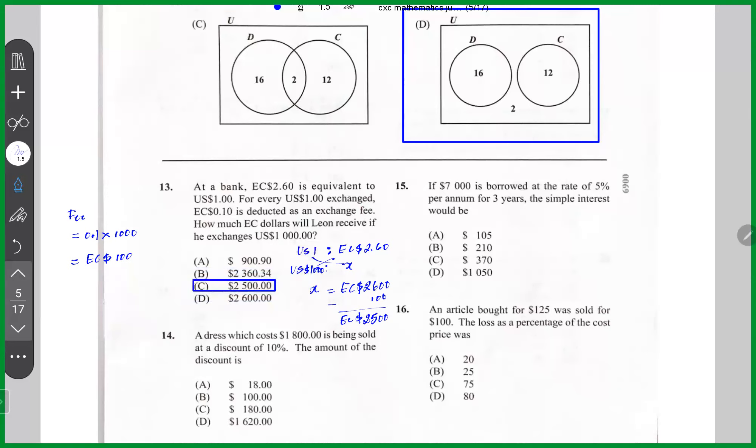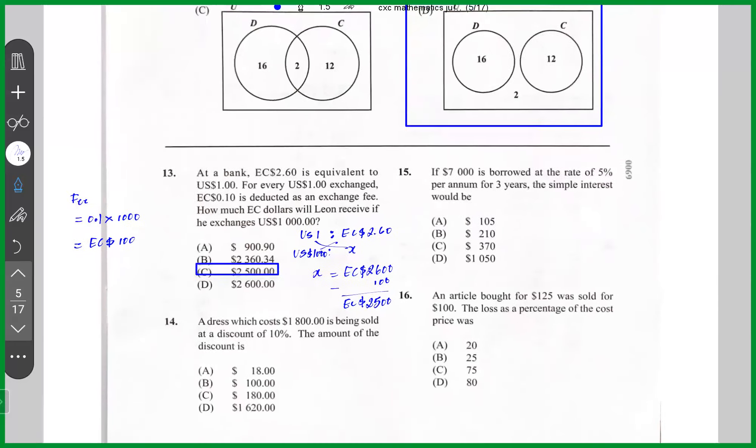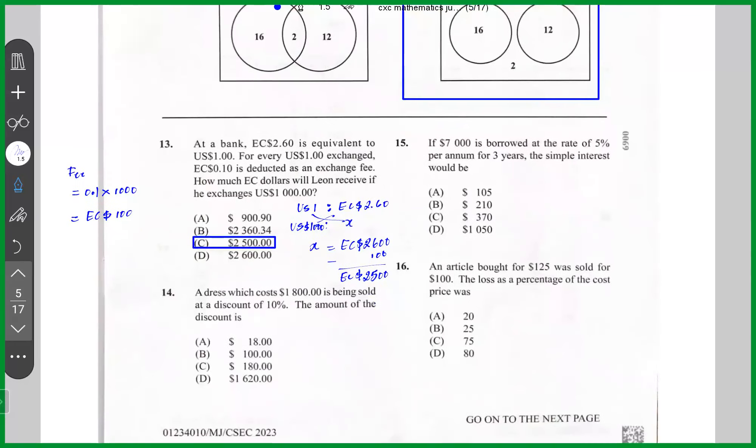Number 14, a dress which costs $1,800 is being sold at a discount of 10%. The amount of the discount is, the discount is 10% of $1,800, which is simply $180.